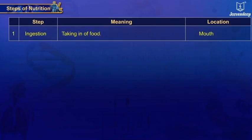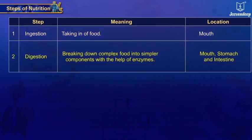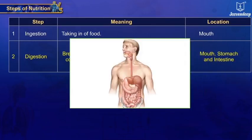Step 1: Ingestion — taking in of food; location: mouth. Step 2: Digestion — breaking down complex food into simpler components mechanically and with the help of enzymes; location: mouth, stomach, and intestine.